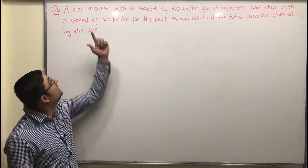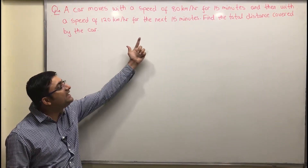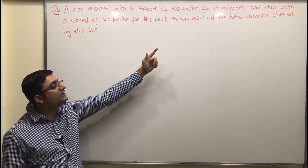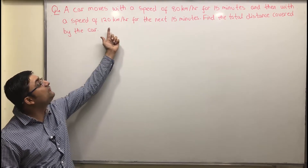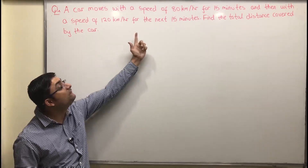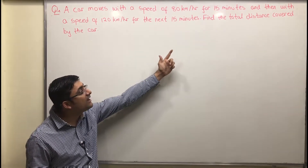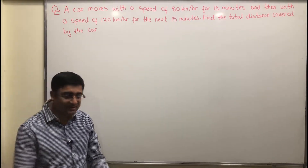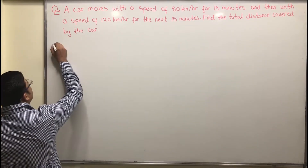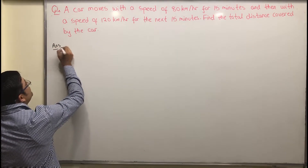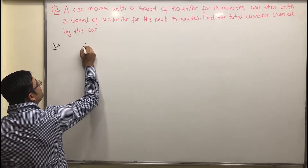Let's read the question: a car moves with a speed of 80 kilometers per hour for 15 minutes, and then with a speed of 120 kilometers per hour for the next 15 minutes. Find the total distance covered by the car. Let's begin by visualizing this problem.